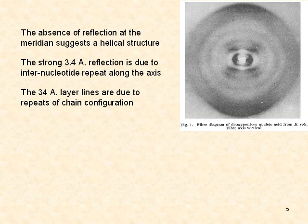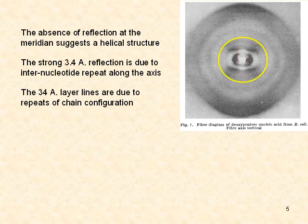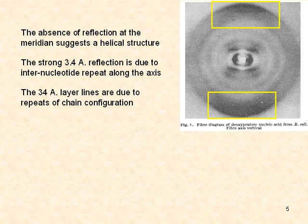If you look at the figure on the right, an X-ray diffraction photo of E. coli DNA, you'll notice an absence of reflection at the meridian, which suggests the helical structure. The strong 3.4-angstrom reflection is due to internucleotide repeat along the axis, and 34-angstrom layer lines are due to repeats of chain configuration.